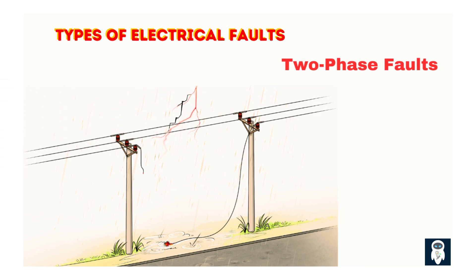Two-phase faults involve short-circuits between two phases or between a phase and neutral, often caused by damaged insulation or external objects coming into contact with power lines. While less severe than three-phase faults, two-phase faults can still lead to power outages and pose safety risks to both workers and the public. For instance, if a damaged power line comes into contact with a tree branch, it could result in a two-phase fault causing a localized power outage.